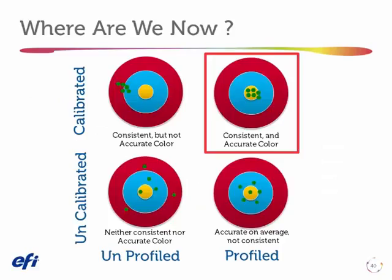If we go back to our 'where are we now' diagram, we went from being uncalibrated to calibrated — so we got very consistent but not very accurate. Now we're in the upper right corner: we've profiled. Not only are we consistent, but we're consistently hitting a standard. Your standard is probably something like SWOP or GRACoL, or maybe Fogra, depending on where you're listening from today. These are the industry references we try to match our presses to, so we know they're consistent from device to device and we can win those really picky customers that require these kinds of things.